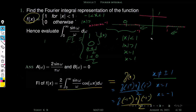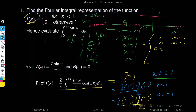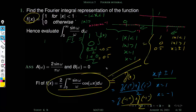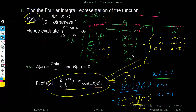So the Fourier integral equals: 1 when |x| < 1; 0 when |x| > 1; and 0.5 when x = ±1. This integral value depends on the parameter x. For example if x = 10, that belongs to |x| > 1, so the integral value is 0. If x = ±1, the integral value is 0.5.